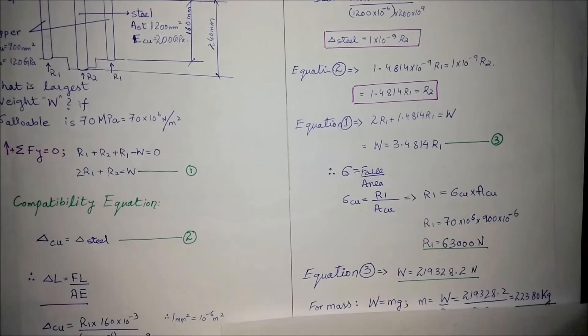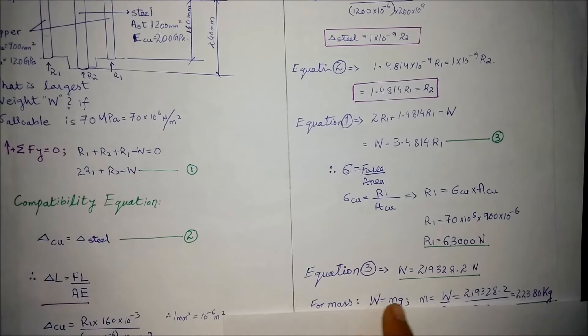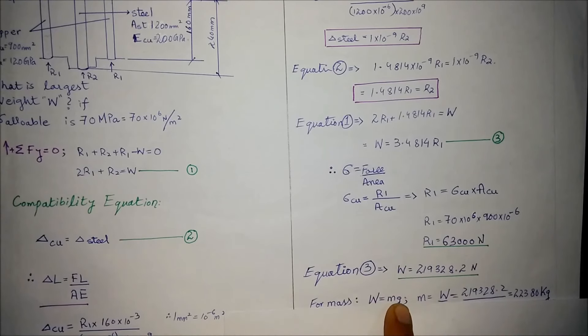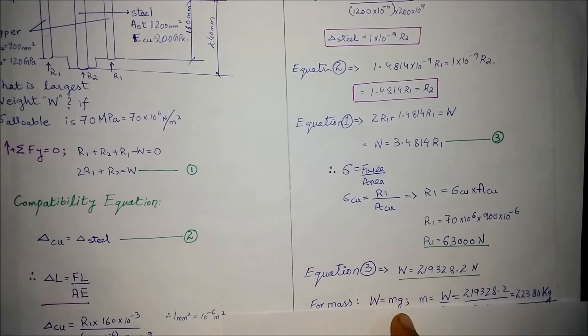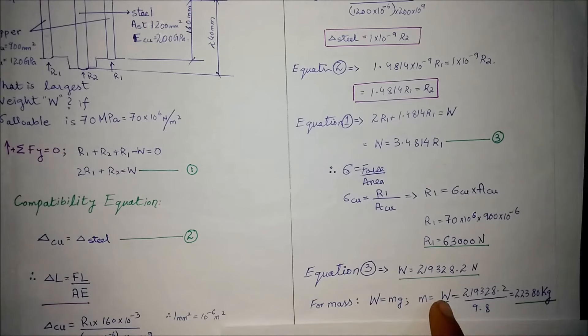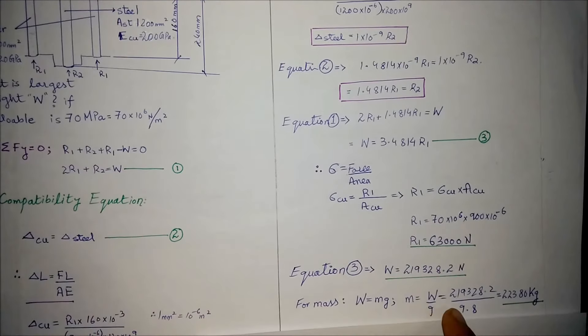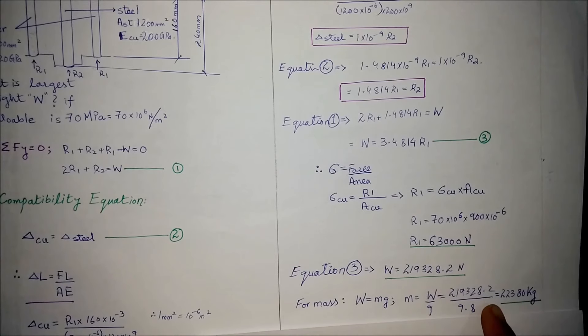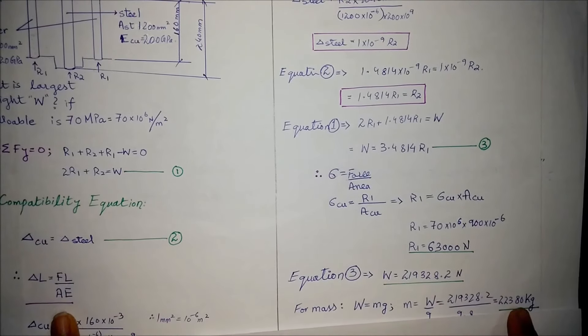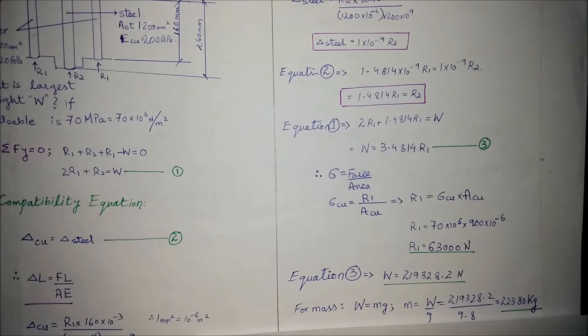For finding out the mass we know that weight equals mass times gravitational acceleration. Mass equals weight over 9.8, which equals 22,380 kilograms. This is the maximum mass that can be supported by the pile.